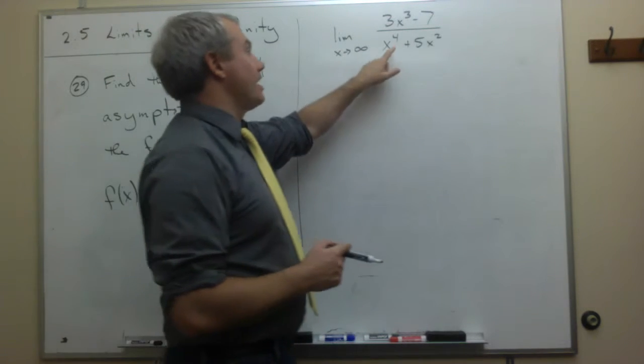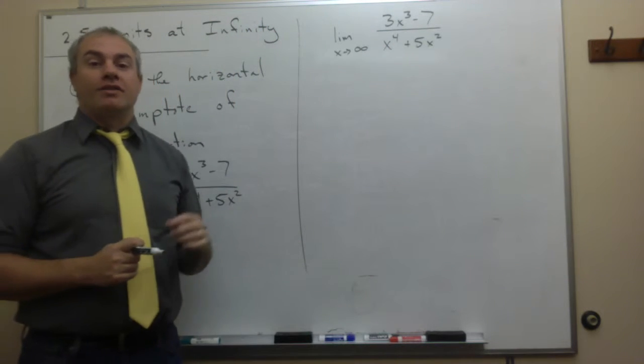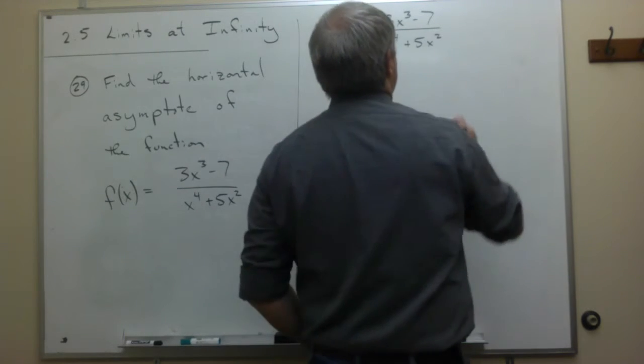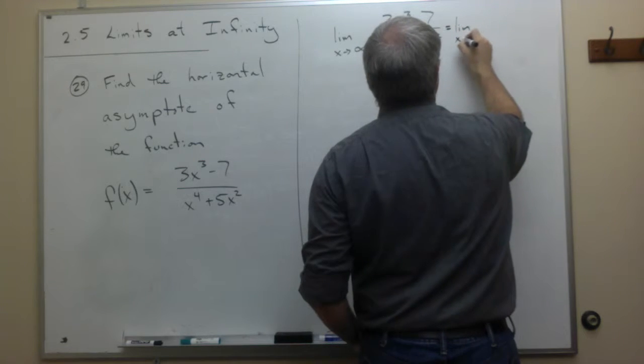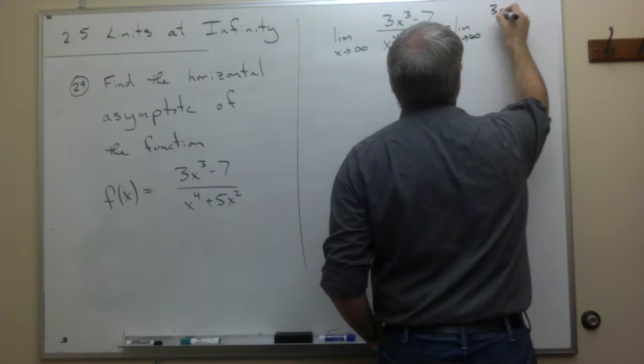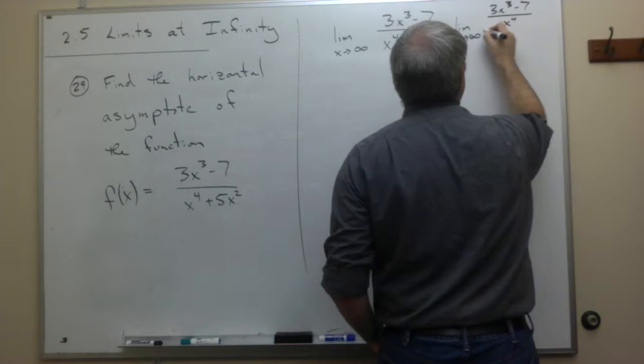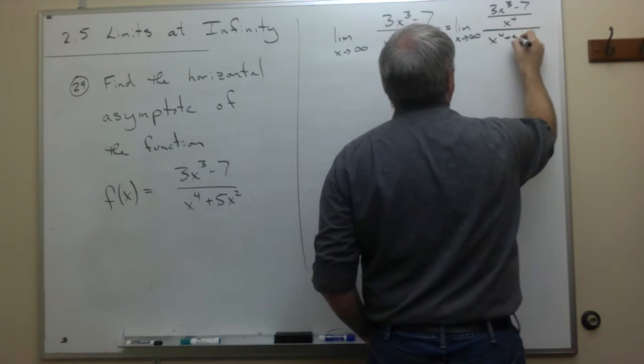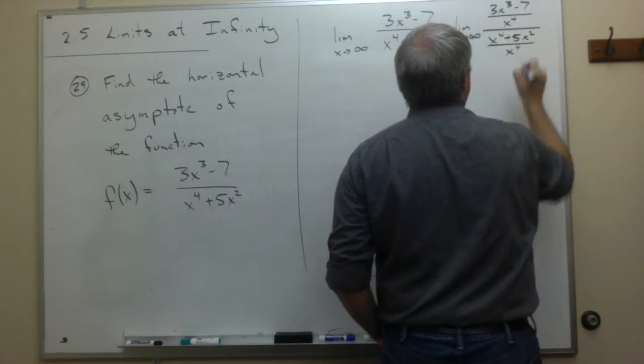Well, in this case, the highest power of x is x to the fourth. So I want to go ahead and divide the top and the bottom by x to the fourth. So let me write that in. So I get the limit as x goes to infinity of 3x cubed minus 7 divided by x to the fourth divided by x to the fourth plus 5x squared divided by x to the fourth.